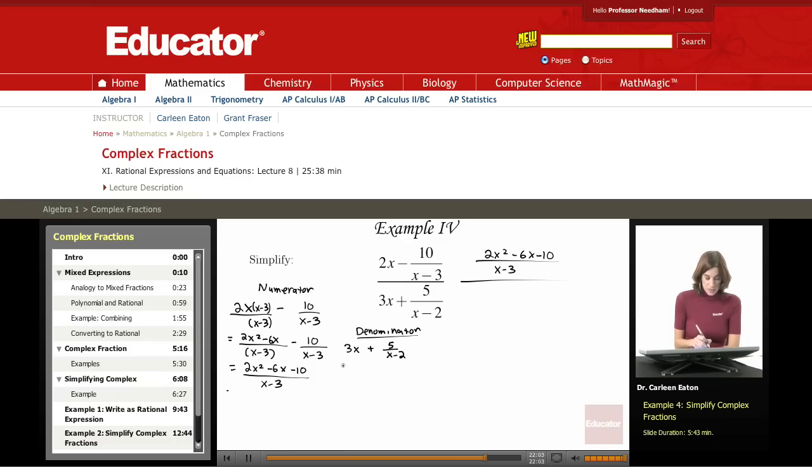I need to multiply the numerator of 3x, which is really 3x over 1, times x minus 2 over x minus 2.